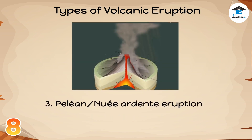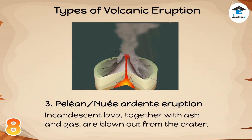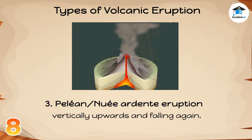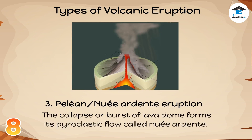3. Pelean / Nuée Ardente Eruption: Incandescent lava, together with ash and gas, are blown out from the crater vertically upwards and fall again. The collapse or burst of a lava dome forms a pyroclastic flow called Nuée Ardente, which spills like glowing red avalanches along the slopes and can be very deadly and destructive.